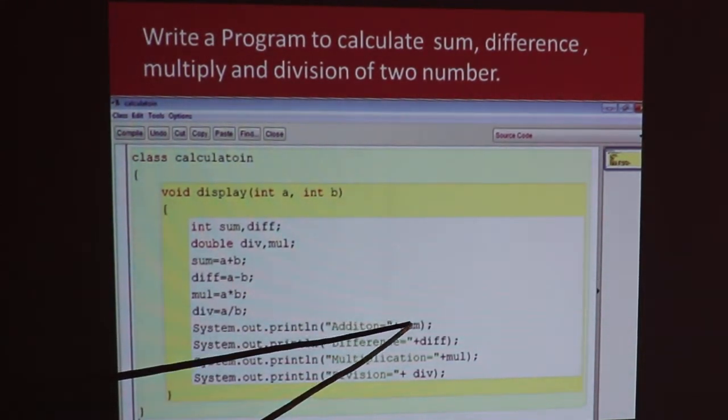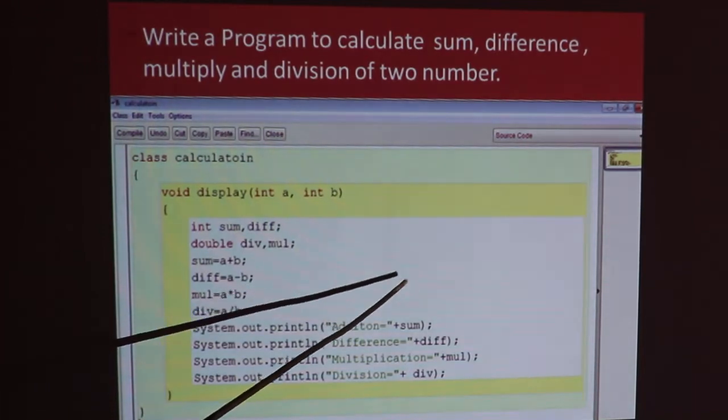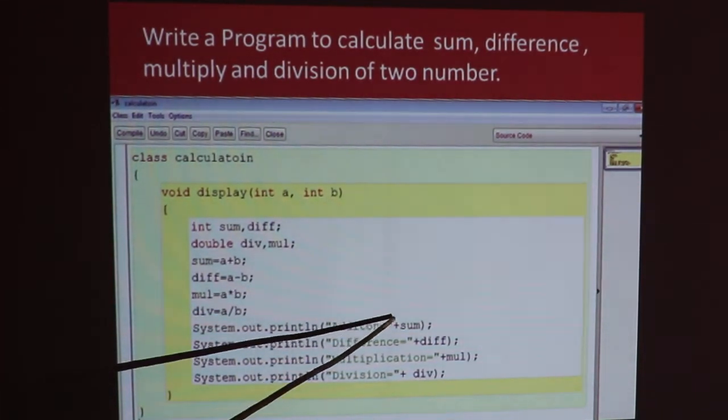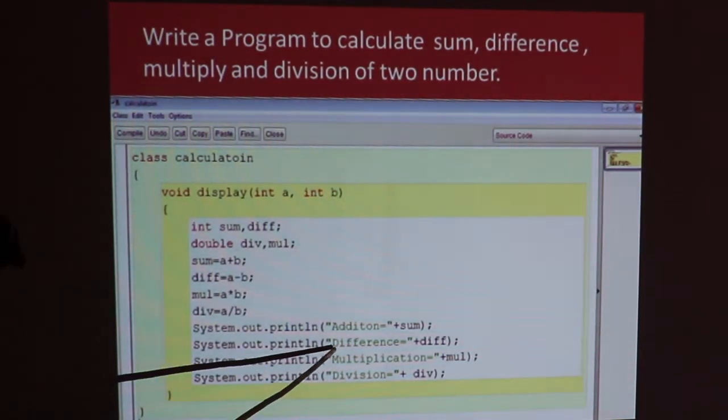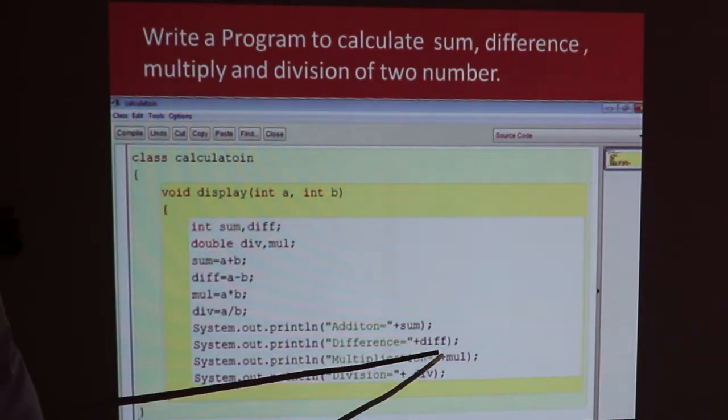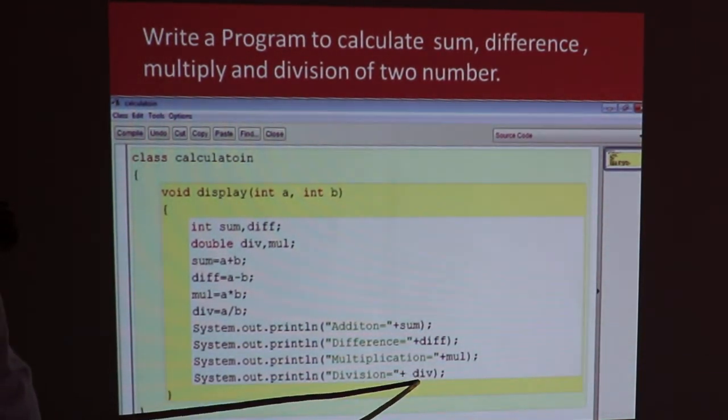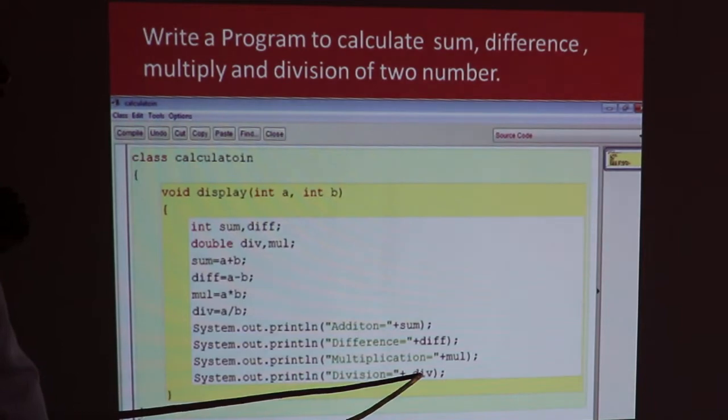Addition is equal to sum. Suppose 5 and 5, addition is equal to 10. What is difference? If 5 and 5, then 0. Multiplication is equal to 5 times 5, which is 25. Division is equal to 5 divided by 5, which is 1.